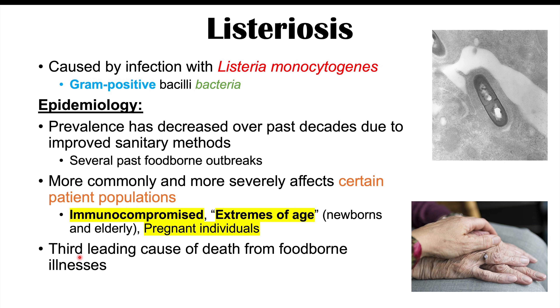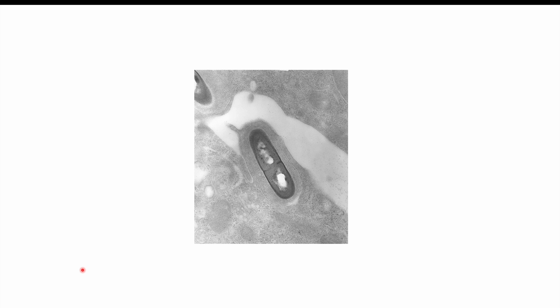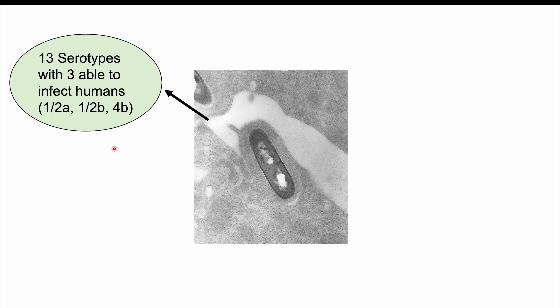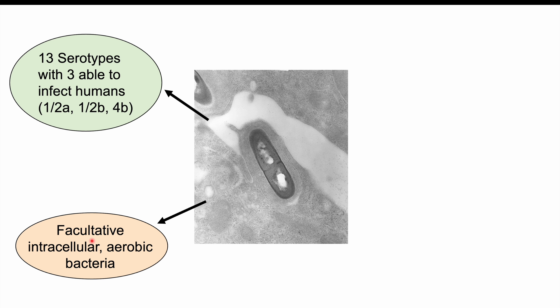This condition is actually the third leading cause of death from foodborne illnesses. There are 13 serotypes of Listeria monocytogenes, with three able to infect humans. It is a gram-positive bacilli, but also a facultative intracellular aerobic bacteria, meaning it can live either inside or outside host cells, and requires oxygen.